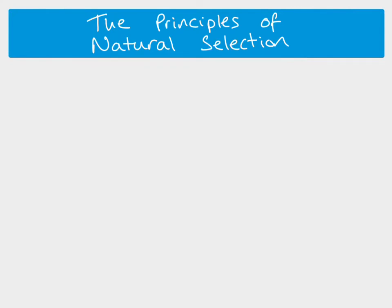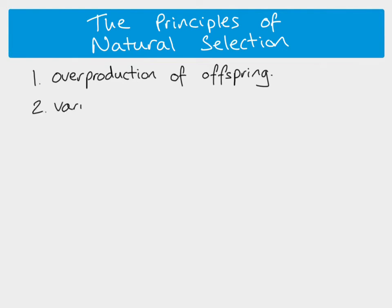To summarize the principles of natural selection: first is overproduction of offspring — to maintain a constant population level, more individuals are born than will survive, with a high rate of reproduction but many dying before they reproduce. Second, we have to have variation in the population. If individuals are all genetically identical, natural selection cannot happen. Natural selection is the process of a selection pressure causing some individuals to die and the more advantageous individuals to survive and pass on their advantageous alleles.